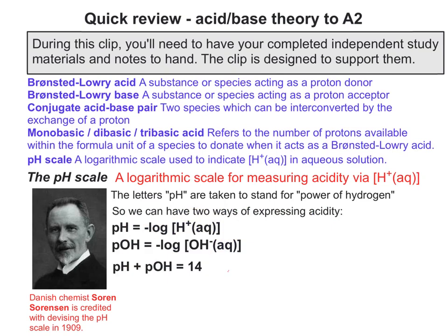We can use hydrogen ion concentration — pH = -log[H+] — or we can use pOH to give us an indication of the concentration of hydroxide ions. For any solution, the pH plus the pOH will always equal 14.